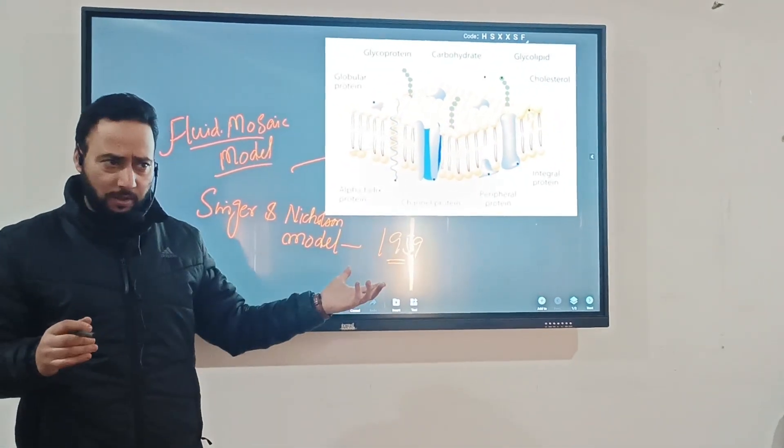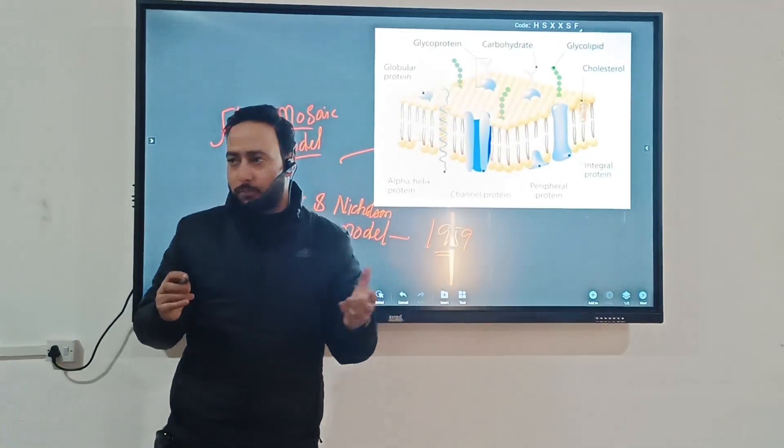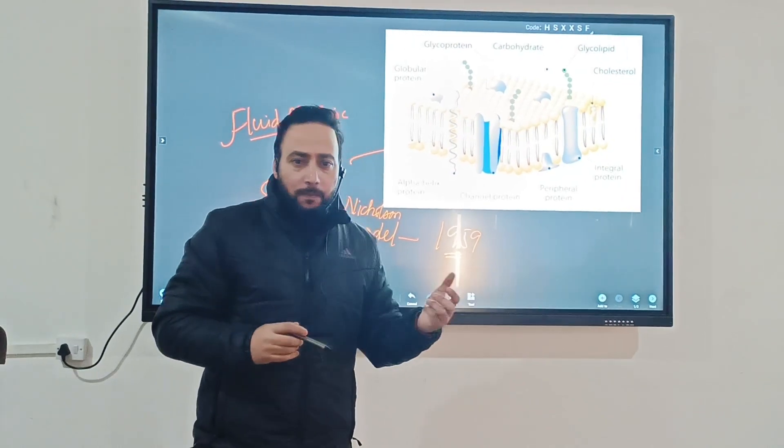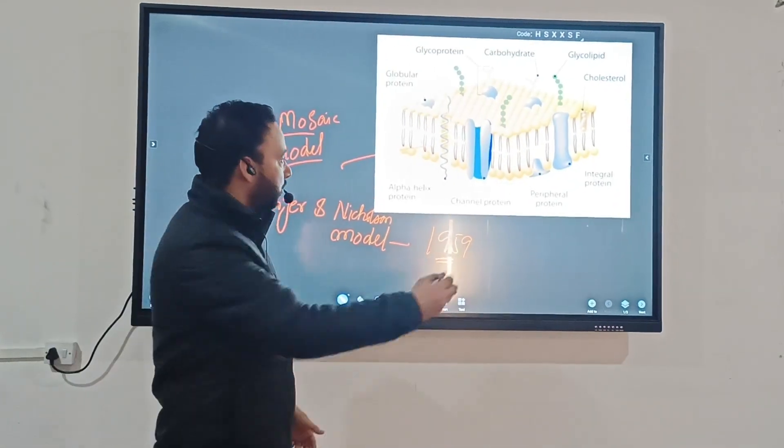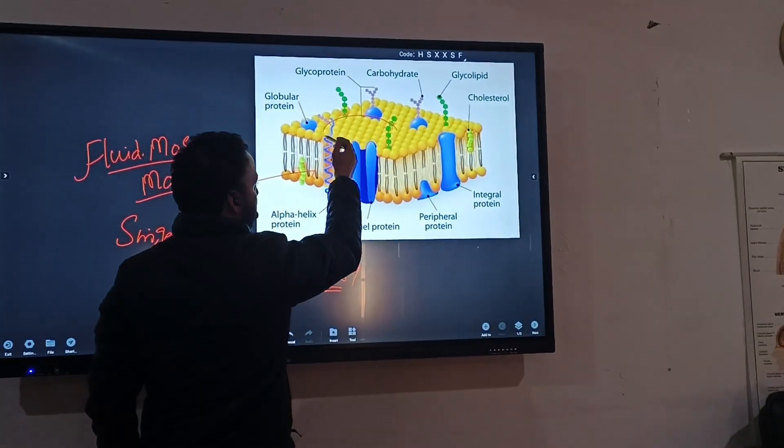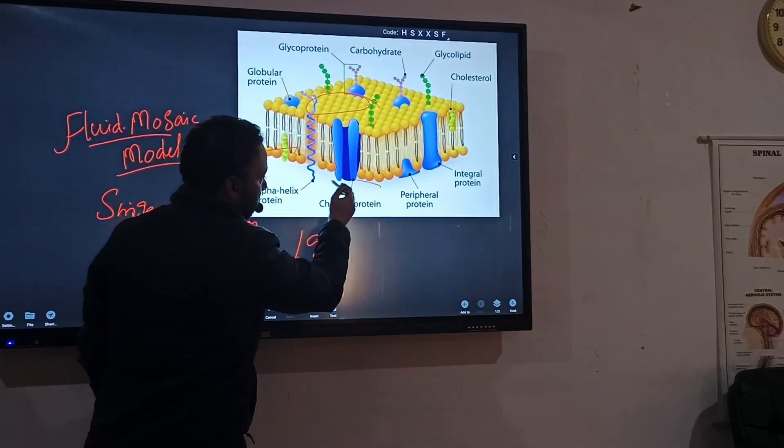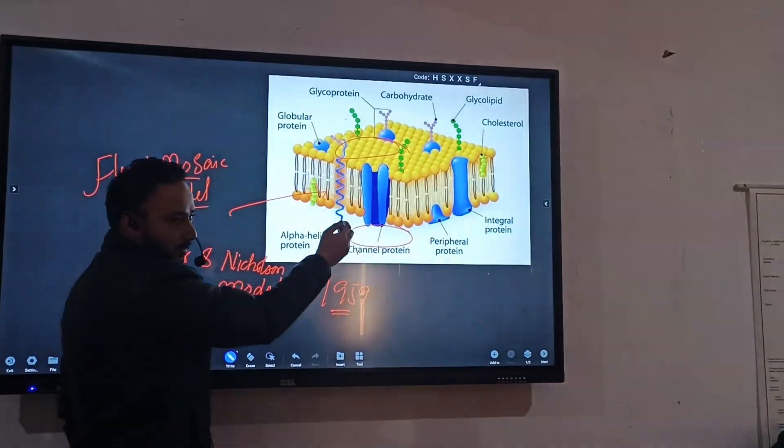But this is not a lipid bilayer as it was suggested in the Danielli and Davson model and Robertson model. This is actually, if we summarize this fluid mosaic model in one line, it's a protein iceberg floating in a sea of lipids. You can see from here there are proteins from outside, there are proteins from the cytosolic side.